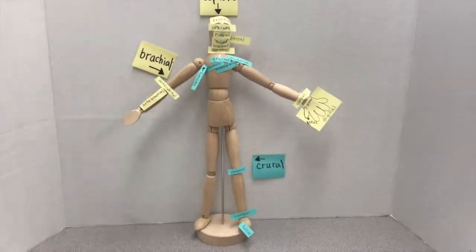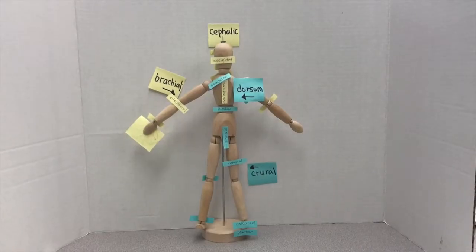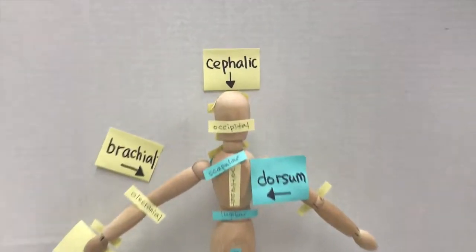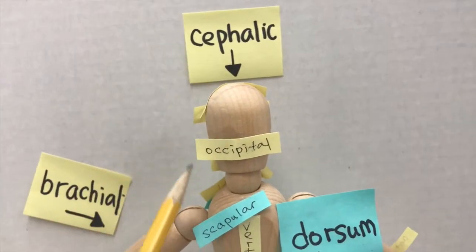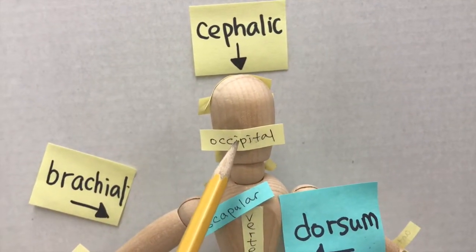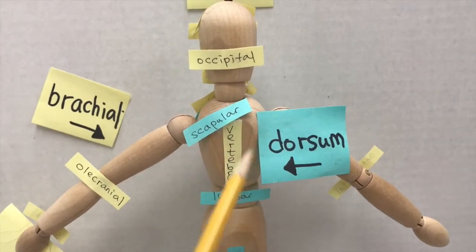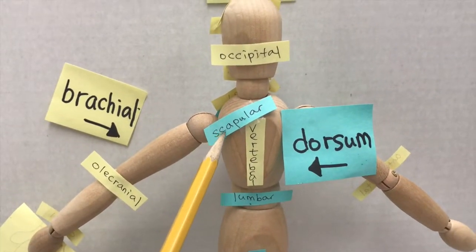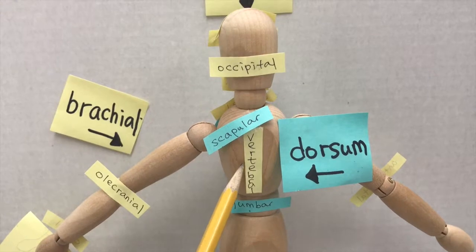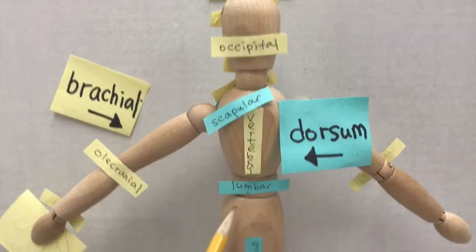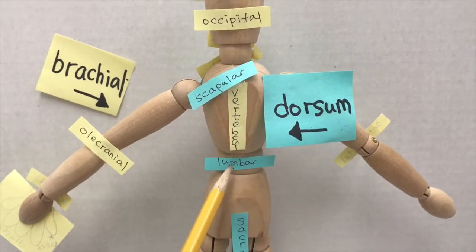Those are the regional terms in anterior position. Now let's look at posterior position. So we also start with cephalic (head). We have occipital (base of skull). And then in the dorsum (back), we have scapular (shoulder blade), vertebral (spinal), and lumbar (loin).